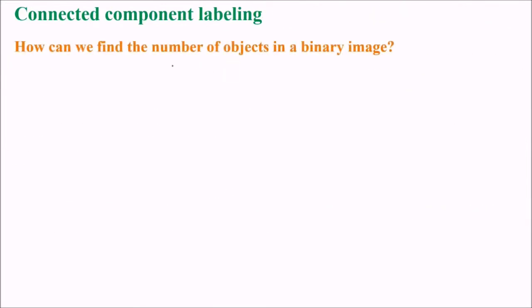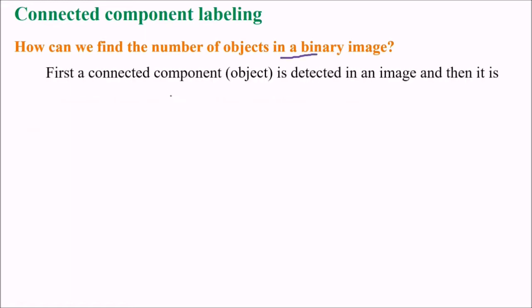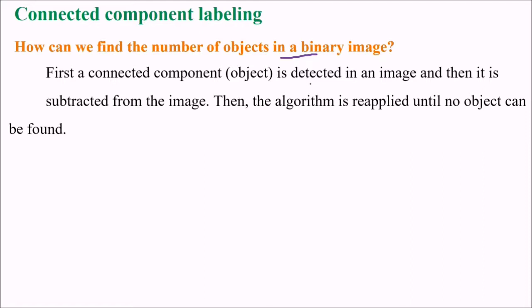Connected component labeling. How can we define or find the number of objects in a binary image? First a connected component is detected in an image, then it is subtracted from the image. Then the algorithm is reapplied until no object can be found.